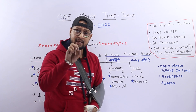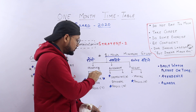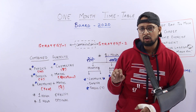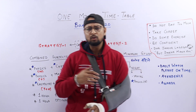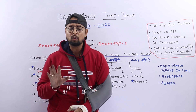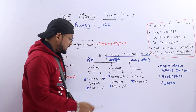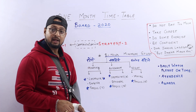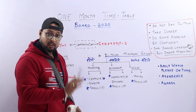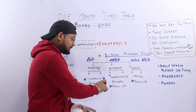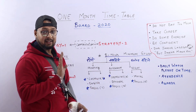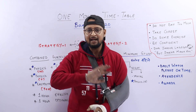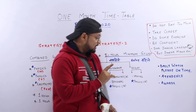Afternoon time mein Chemistry ke numericals lagaenge. Optional subject bhi padhenge — jo bhi optional subject hai jaise PE, IP, Economics, Psychology, Hindi — ushe afternoon mein uthao. Agar us din Chemistry hai to pehle wo, phir optional, phir agar time mile to Physics ka numerical. Night ka time Maths ke liye fix hai — Maths raat ko hi dekhna hai, uske baad Physics numericals.